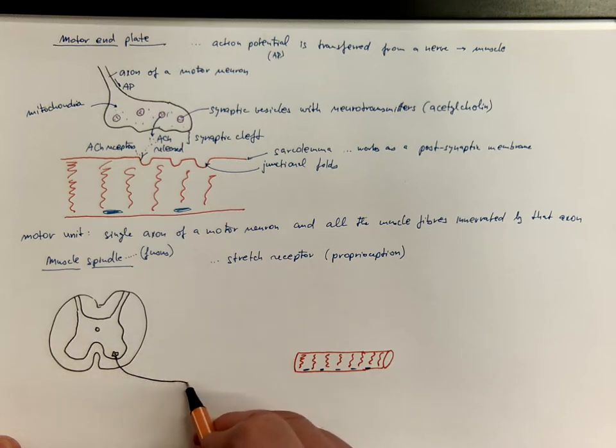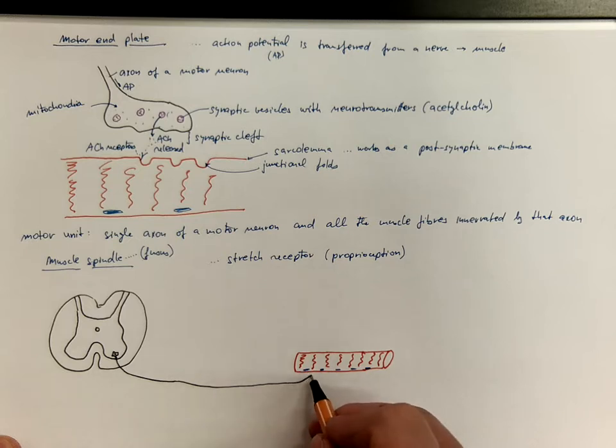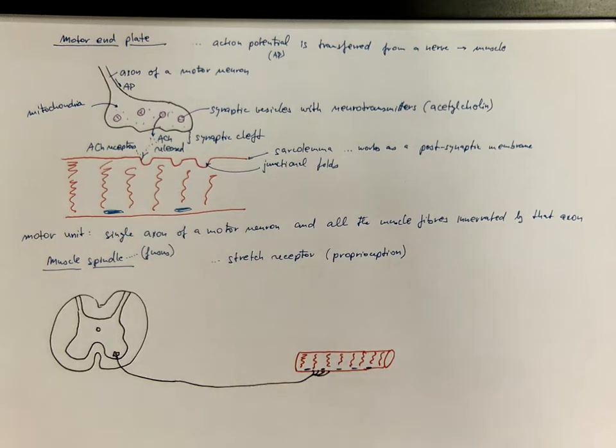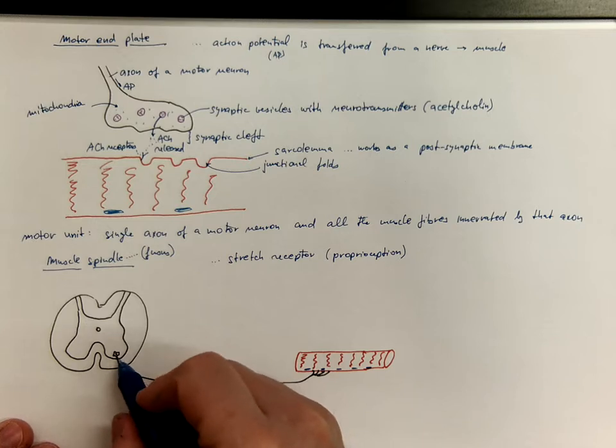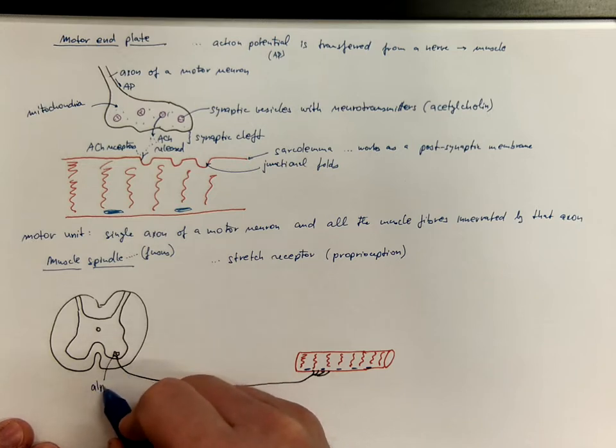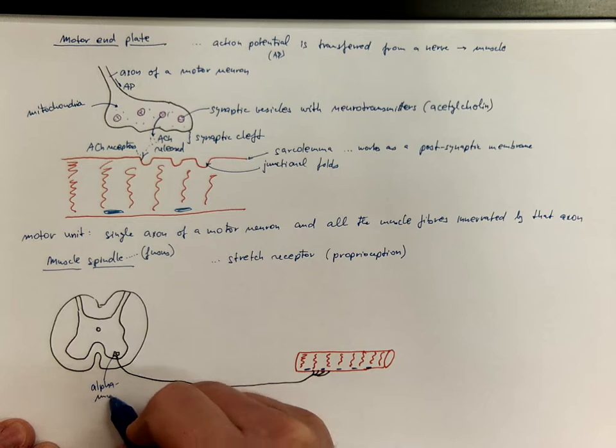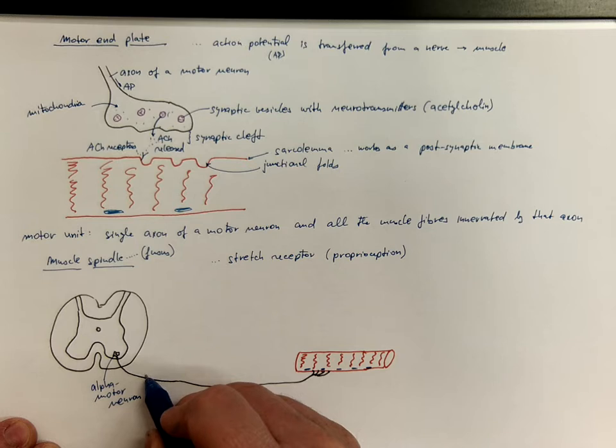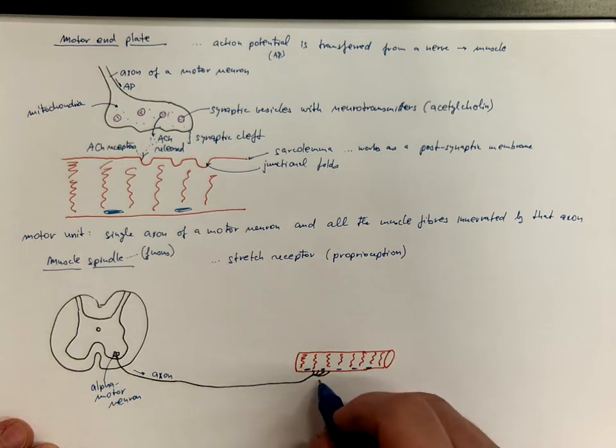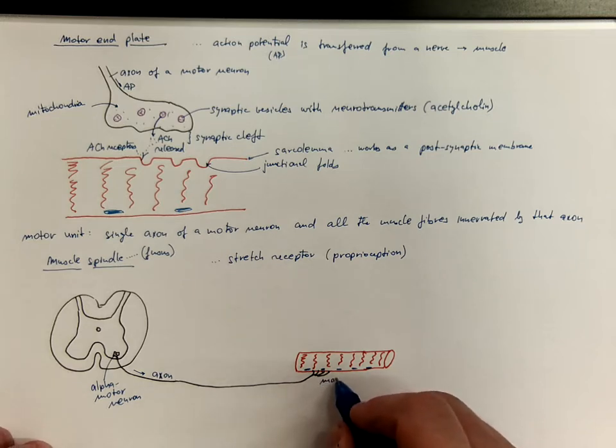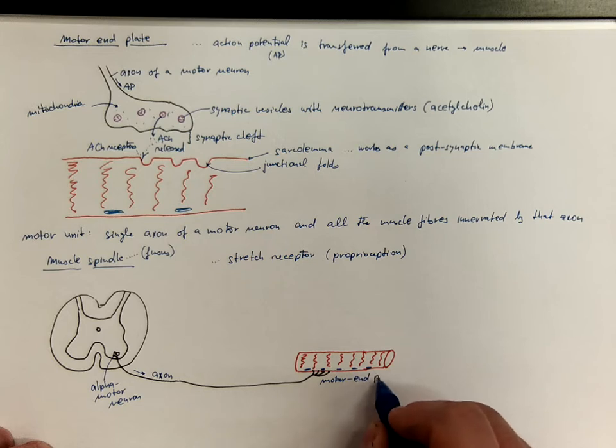So these neurons are sending axons that end with a motor end plate. So this is a motor neuron called alpha motor neuron. It sends a projection called axon, a process called axon that ends with a motor end plate on a skeletal muscle fiber.